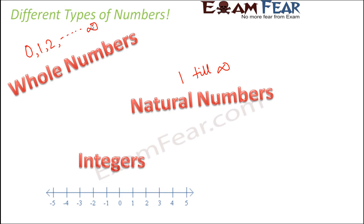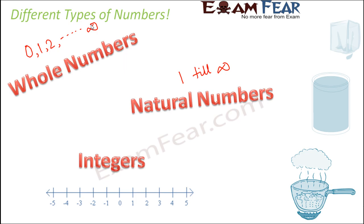Next come integers. Integers include all whole numbers — and therefore all natural numbers — but they also include negative numbers. Consider water: when you put a glass of water in the freezer, after a couple of hours it turns to ice. The temperature inside the freezer was so low that the water froze. The room temperature might be a positive value like 10 or 5 degrees Celsius, but the temperature of the ice would be below zero — maybe minus 5 degrees Celsius.